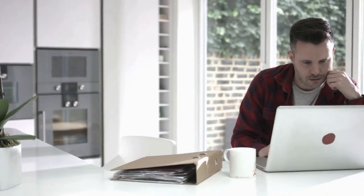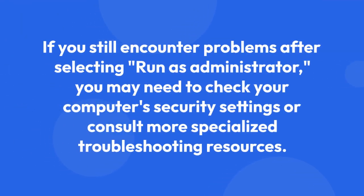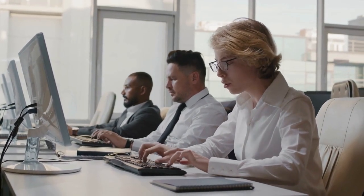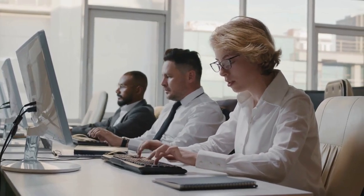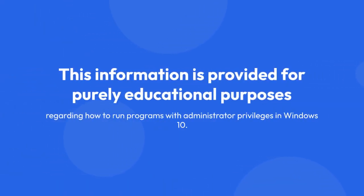Step 6: Troubleshooting. If you encounter issues, ensure you are logged into your Windows account with administrator privileges. If you're using a standard user account, you won't be able to run the program as administrator. If you still encounter problems after selecting 'Run as administrator,' you may need to check your computer security settings or consult more specialized troubleshooting resources. Again, remember that using unauthorized software poses significant risks, and I strongly discourage its use. This information is provided for purely educational purposes regarding how to run programs with administrator privileges in Windows 10.